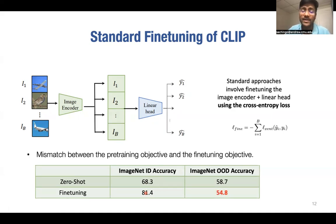Note that there is a mismatch between the pre-training and the fine-tuning objective. We pre-trained using a contrastive loss, and then we are fine-tuning using the cross-entropy loss. Now, this results in a drop in the OD accuracy. For example, here, the zero-shot accuracy was 58% and the fine-tuning accuracy was 54%. We propose a very simple fix to this to mitigate the drop in the OD accuracy.